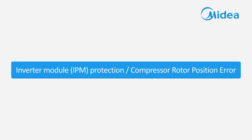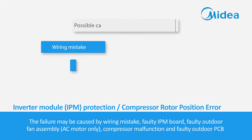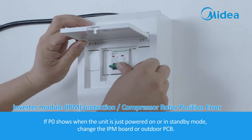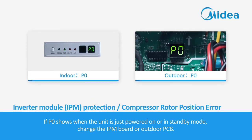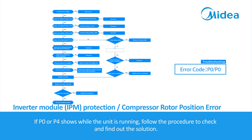Inverter module IPM protection and compressor rotor position error. Malfunction conditions: when the voltage signal the IPM sends to the compressor drive chip is abnormal, or the compressor feedback signal is abnormal, the display LED will show P0 or P4 and the AC will turn off. The failure may be caused by wiring mistake, faulty IPM board, faulty outdoor fan assembly (AC motor only), compressor malfunction, or faulty outdoor PCB. If P0 shows when the unit is just powered on or in standby mode, change the IPM board or outdoor PCB. If P0 or P4 shows while the unit is running, follow the procedure to check and find the solution.